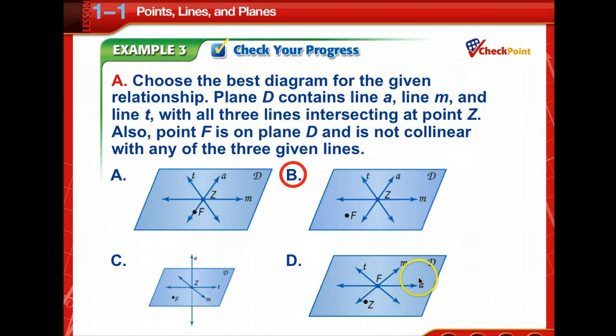Now these others all have A, M, T. Okay. So that's good. They all intersect at point Z. There. There. Whoops. F. Okay. So that's why D is thrown out. So now we're just looking at these two. And then it says point F is on plane D and is not collinear. Here F is collinear. Here F is not. So that's why B is your solution. Good job, those of you that chose B.